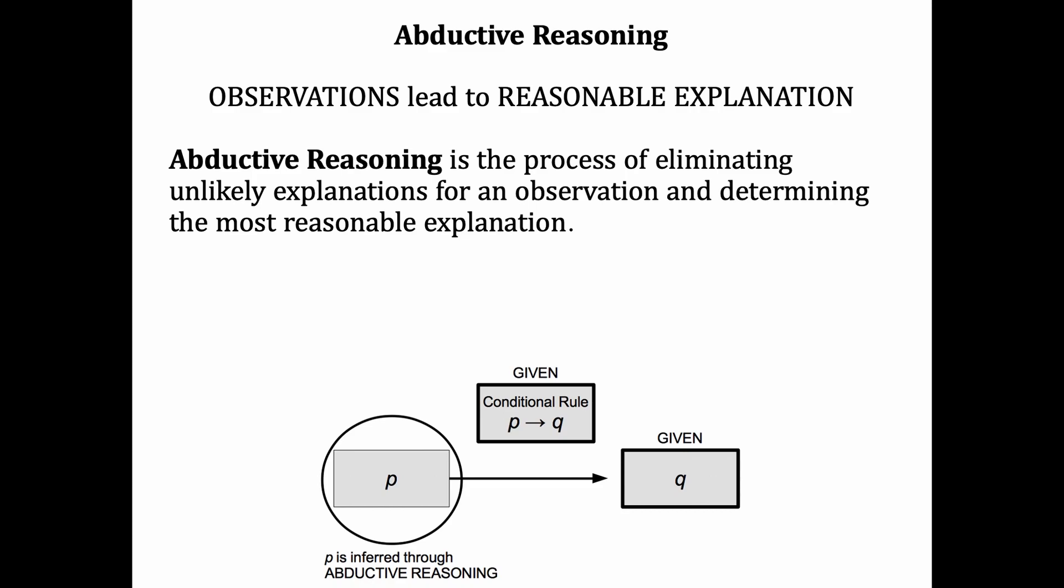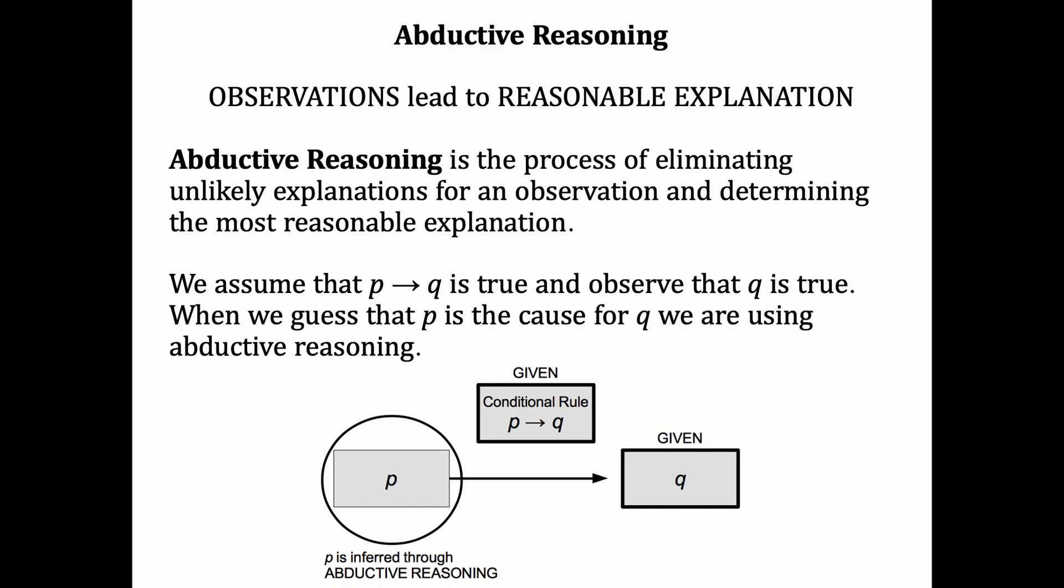To do abductive reasoning, you first have to assume that some conditional statement P implies Q is true. So that's going to be given. We also have to observe that some effect Q has happened. So that is given as well. When we guess that P is the cause for Q, then we're using abductive reasoning. So P is inferred.